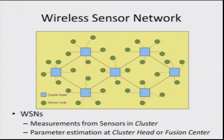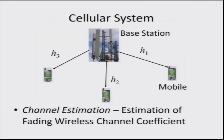Estimation is applicable in wireless sensor networks — shown here is a typical wireless sensor network in which sensors send their measurements to a cluster head or fusion center, and the fusion center needs to estimate the parameter from those measurements. In a wireless cellular network, several wireless devices such as cell phones communicate with a base station, and the underlying channel has to be estimated. This problem is known as channel estimation.